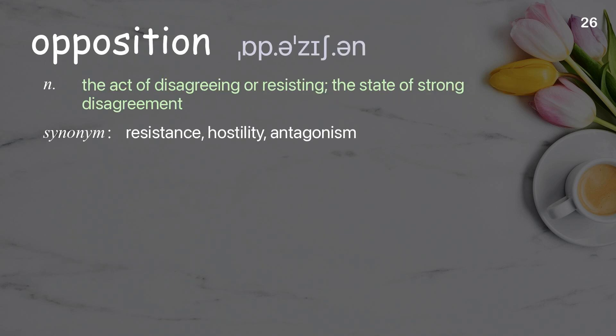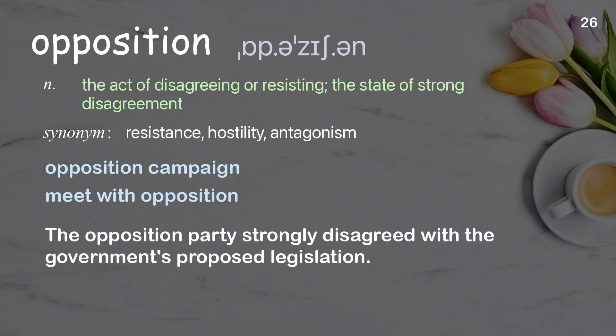Opposition: the act of disagreeing or resisting; the state of strong disagreement. Examples: opposition campaign; meet with opposition. The opposition party strongly disagreed with the government's proposed legislation.